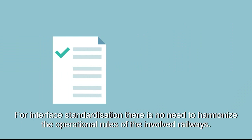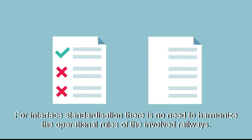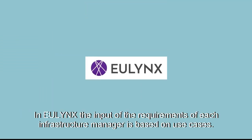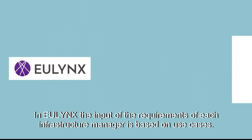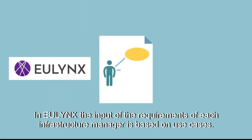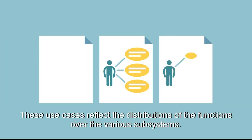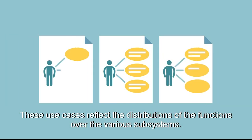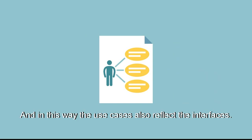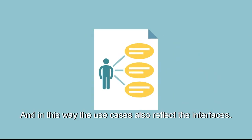In interface standardisation, there is no need to harmonise the operational rules of the involved railways. In ULINX, the input of the requirements of each infrastructure manager is based on use cases. These use cases reflect the distribution of the functions over the various subsystems, and in this way the use cases also reflect the interfaces.